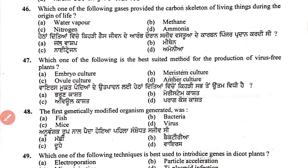Question 49: the first genetically modified organism generated was mice. All genetic modification experiments were historically performed on mice first, so mice was the first GMO in history.